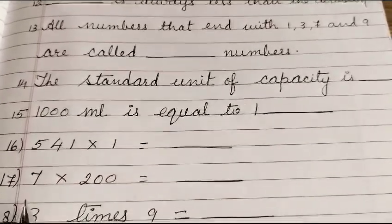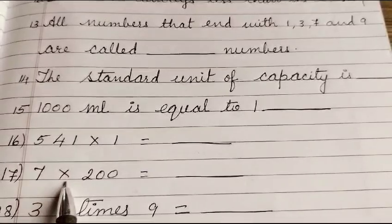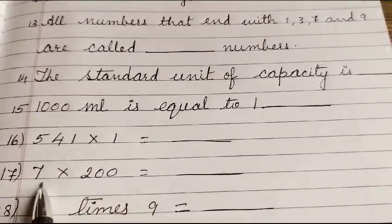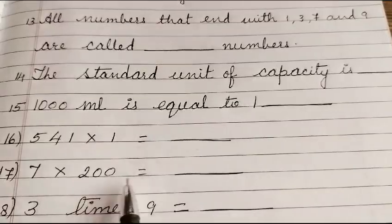Question number 17: 7 multiply by 200 is dash.